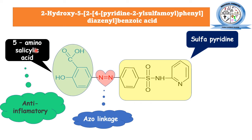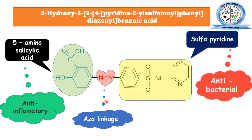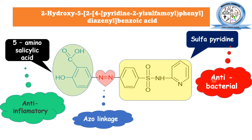The 5-aminosalicylic acid region will be responsible for its anti-inflammatory action, and the sulfapyridine will be responsible for the antibacterial action. If someone asks why sulfasalazine has anti-inflammatory activity, or why it has both antibacterial and anti-inflammatory activity, you may answer accordingly if you know the mechanism of its metabolism.